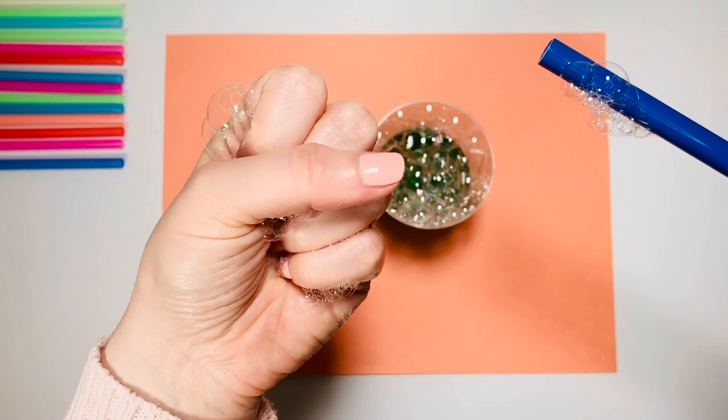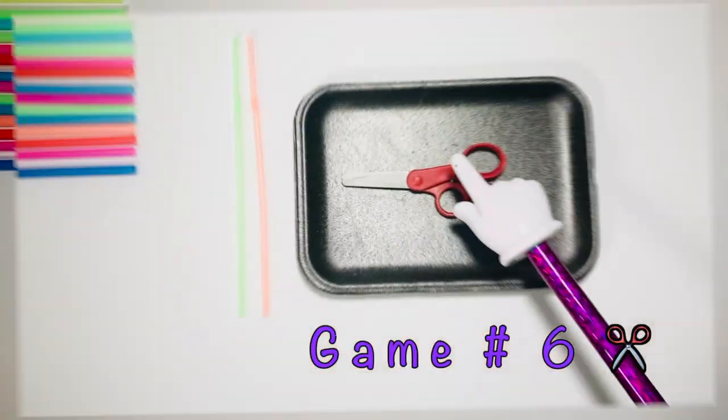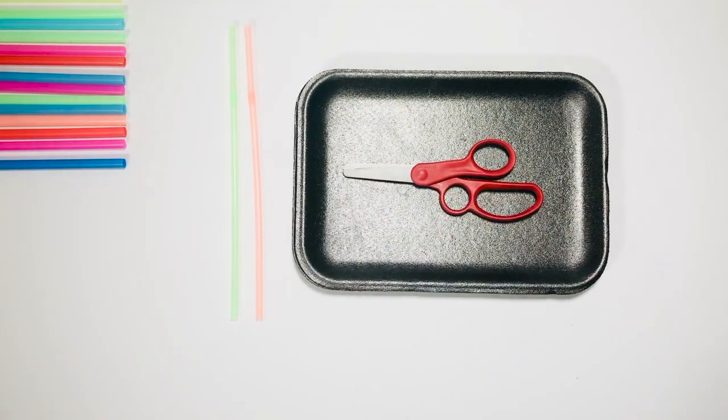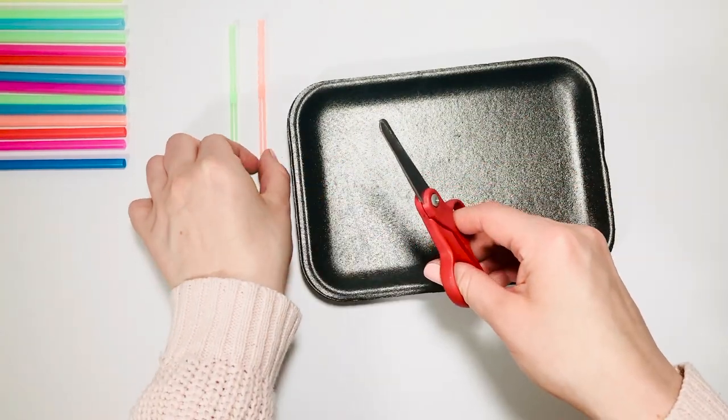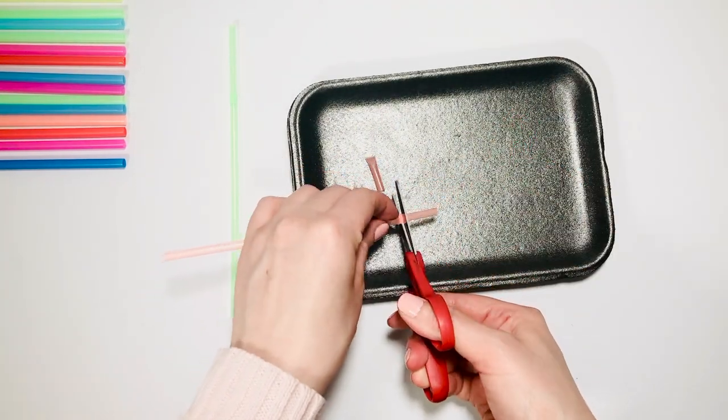Let's do some cutting with game number six. You will need scissors and straw. This activity works on pre-cutting skills, which is called snipping.